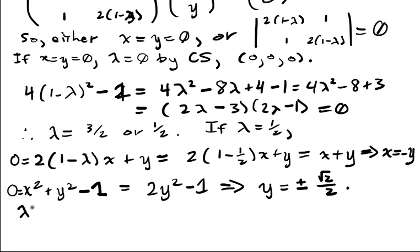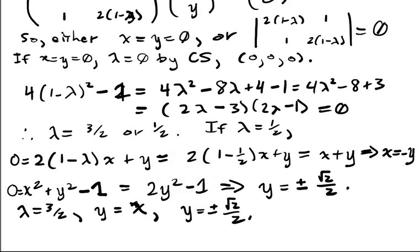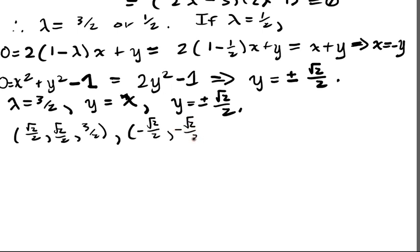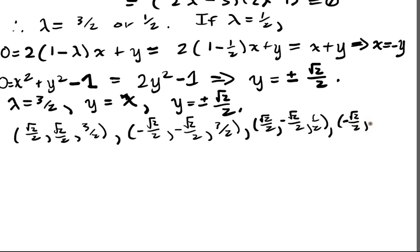Similarly, if lambda equals 3/2, running through the same process gives y equals x, and again y equals plus or minus square root 2 over 2. So we get four points from the boundary case: (√2/2, √2/2, λ=3/2), (−√2/2, −√2/2, λ=3/2), (√2/2, −√2/2, λ=1/2), and (−√2/2, √2/2, λ=1/2).